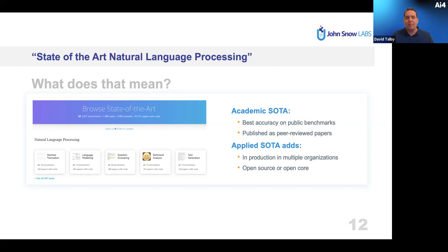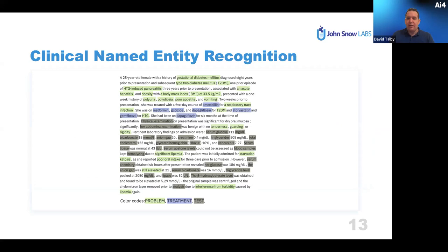The core task for clinical data abstraction is recognizing clinical entities. In this example, there are three types: medical problems, medical treatments, and medical tests — though you may also look for drugs, gene products, and anatomy. The model needs to know that 'gestational diabetes mellitus' is one three-word term that is a medical problem, and that 'blood pressure screening' is one term that is a medical test. That's what a named entity recognition model should do.